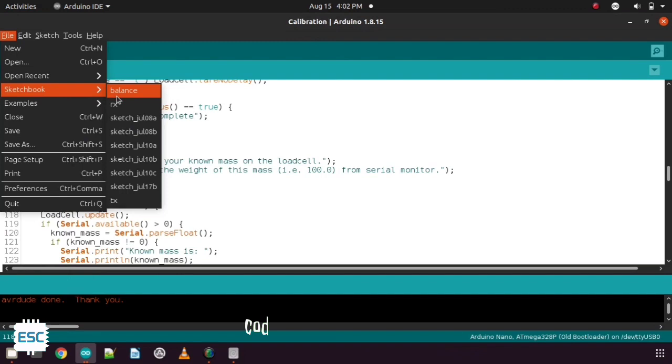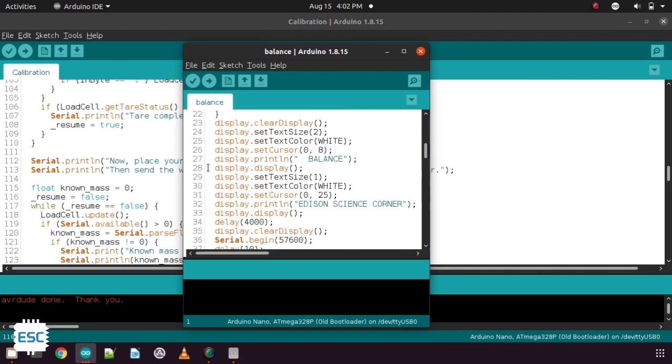Now open the main code. You can download that from my blog. Now upload this code to Arduino and that's it.